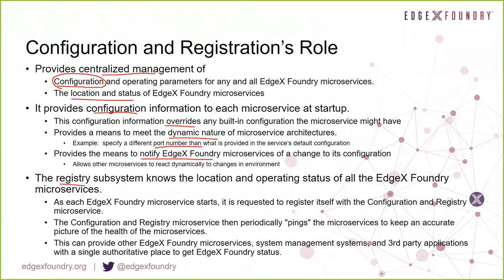The registry part of the configuration and registration microservice is all about location and operating status. Each microservice, when it bootstraps itself up, is required to register itself with the CNR microservice using libraries embedded in our microservices and a REST API. There's also a ping address that the microservice provides to the configuration registration service, which allows it to periodically hit that address to check on health and welfare — to know when a service is up or down.